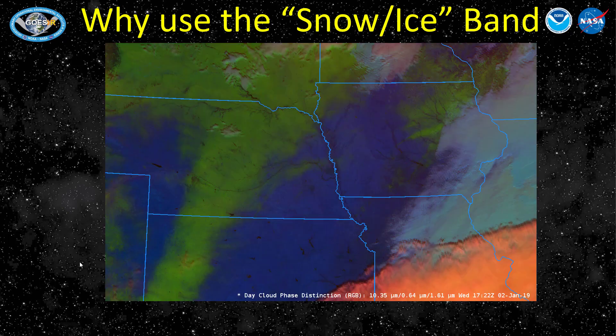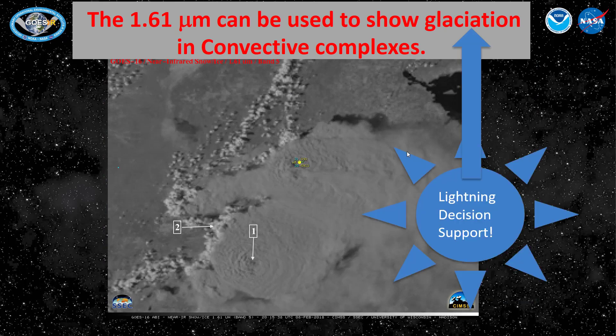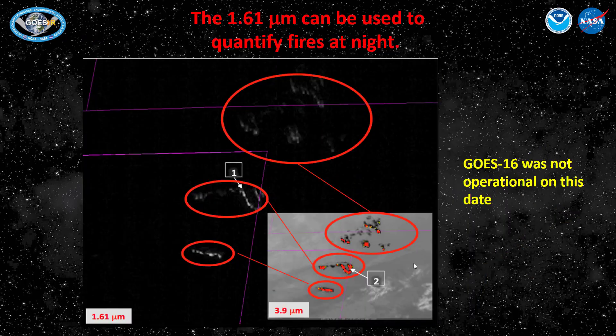Similarly, if you have the day-cloud phase distinction, snow on the ground is showing up as green. If you're monitoring convection with the day-cloud phase distinction, there is a noticeable change in color as clouds glaciate — that's very handy information. Knowledge of glaciation is very important for lightning decision support, which is an important use of the 1.61 micrometer channel. Finally, 1.61 micrometers is important because very hot fires will emit detectable amounts of 1.61 micrometer energy. This channel is part of the fire temperature RGB, used to quantify how hot a fire might be.